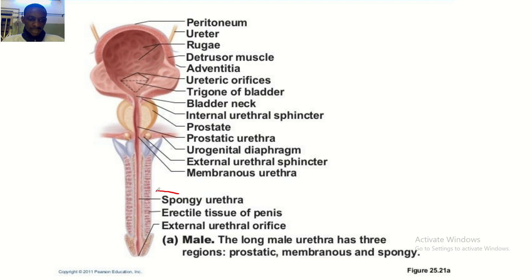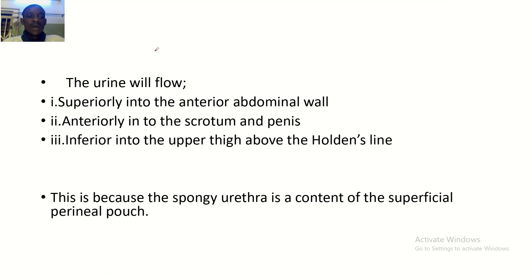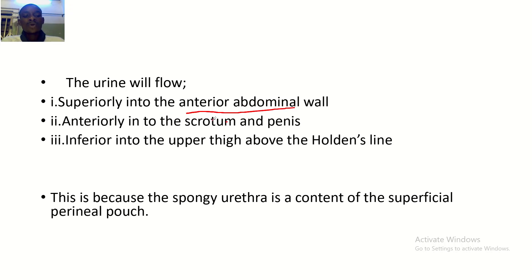You can see the spongy urethra here. If it is ruptured, urine will flow: superiorly into the anterior abdominal wall, anteriorly into the scrotum and the penis, and inferiorly into the upper thigh above Holding's line.